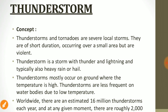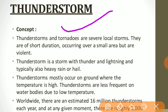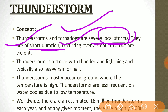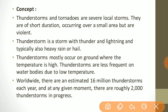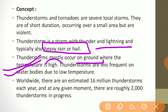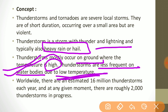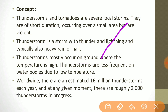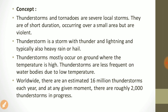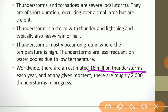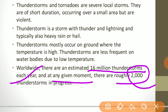Thunderstorms and tornadoes are severe local storms of short duration occurring over a small area but are violent. A thunderstorm is a storm with thunder and lightning, typically also involving heavy rain or hail. They mostly occur on land where temperature is very high, and are less frequent on water bodies due to low temperature. Worldwide, there are an estimated 16 million thunderstorms each year, and at any moment there are roughly 2,000 thunderstorms in progress.